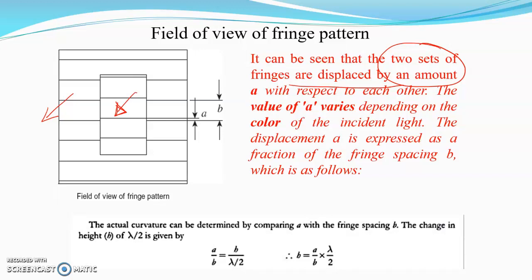The displacement of these two sets of interference patterns is due to the slight taper on the surface of the workpiece. This displacement between the two fringes is measured as 'a', and 'b' is the fringe spacing. The ratio a/b is known as the fraction of fringe spacing.